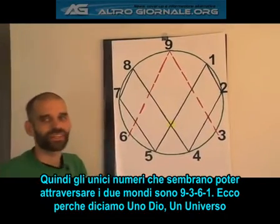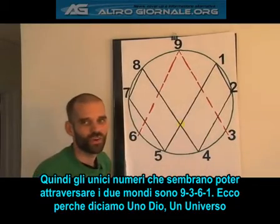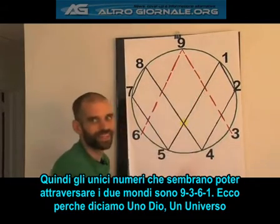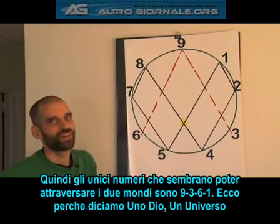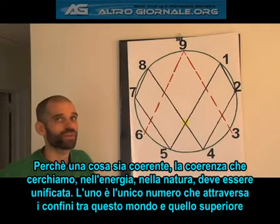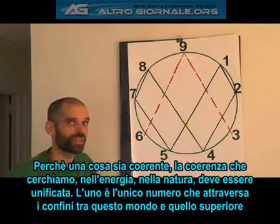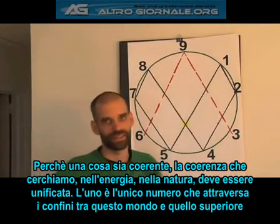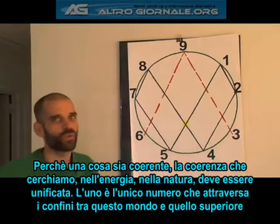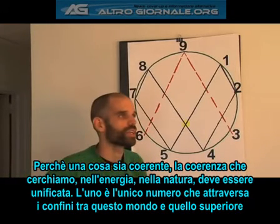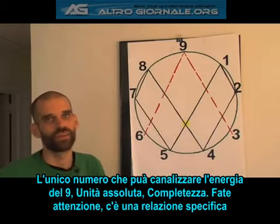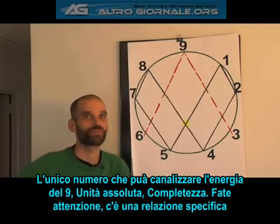So the only numbers that seem to have the ability to cross between one world and the other are 9, 3, 6, and 1. This is why we say one God, one universe. In order for anything to be coherent — which is certainly a property we're looking for in energy and nature — it has to be unified. One is the only number which can cross the boundary between this world and the higher world. It is certainly the only number which has the full capacity for channeling the energy of the 9, which is absolute wholeness, completeness, filled up to the top.